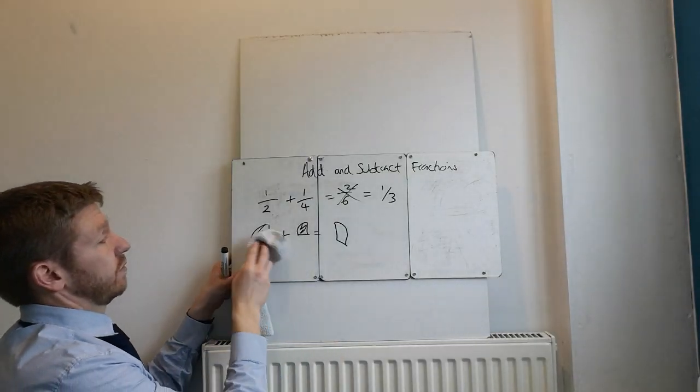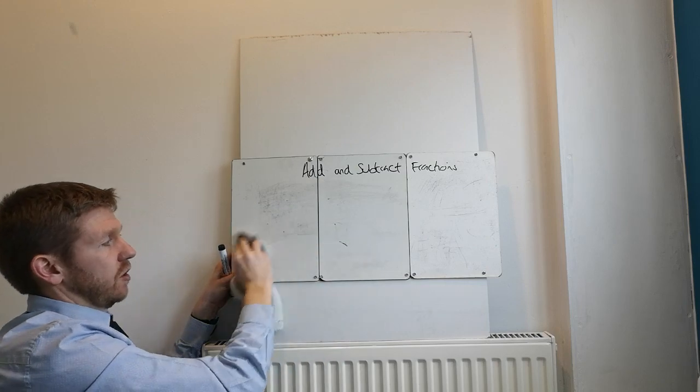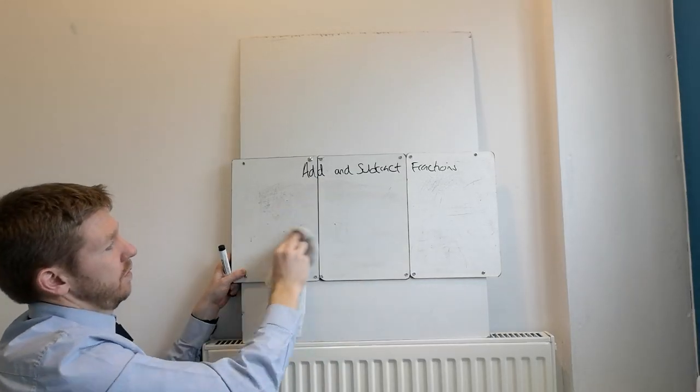Which obviously can't be right. That cannot be right there because a third, a third of a pizza. A third is obviously not those two put together. So when we add fractions with different denominators, we need to make sure we change the denominator so it's the same.